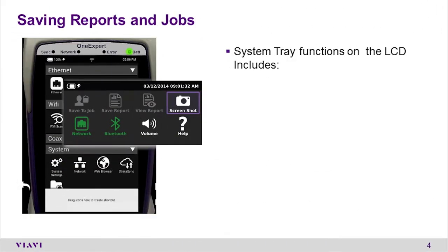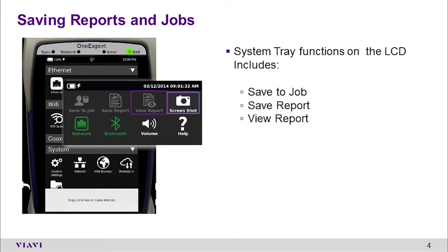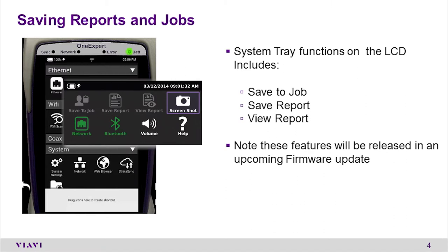The first three options available in the Assistant's Tray menu are Save to Job, Save Report, and Review Report. This allows you to save important information for the current test you're running with a quick swipe down and tap of the Save Report icon. Although this feature is not currently enabled, it's scheduled to be released in upcoming firmware updates.